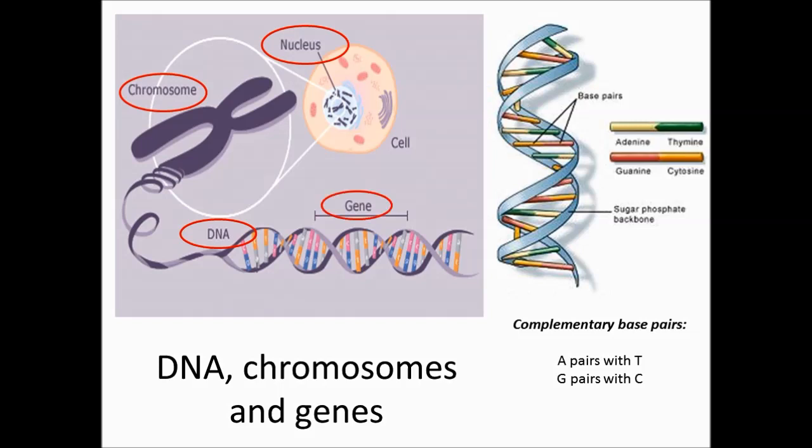A gene is a length of DNA that codes for a specific characteristic. Genes carry the instructions for the cell to make proteins by the specific code in the DNA.